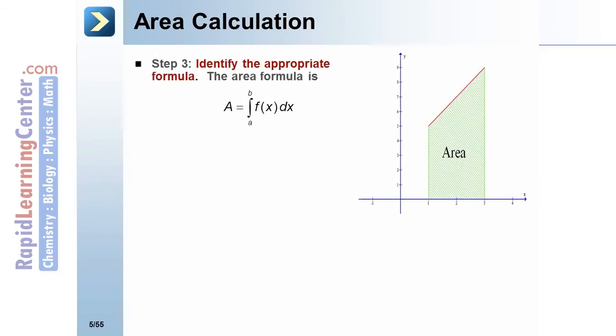Step 3: We identify the appropriate formula. For this problem, the area formula is A = ∫ from a to b of f(x)dx.